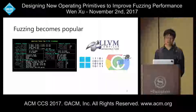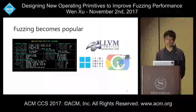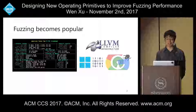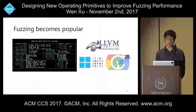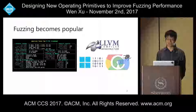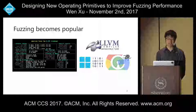In recent years fuzzing has become really popular. Fuzzing is considered one of the most effective ways to find security bugs in software. For example, the well-known fuzzer AFL has already found thousands of bugs in open source projects, and similar fuzzers like LibFuzzer also find a lot of bugs.